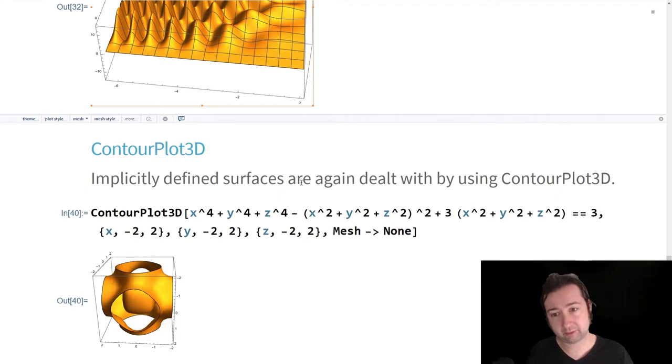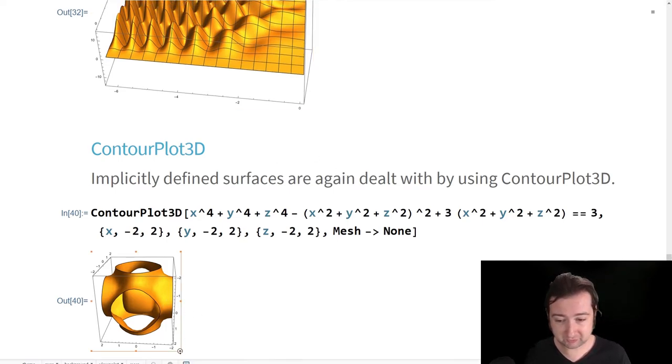Contour plot 3D is a way of working with implicitly defined surfaces. And many of the most interesting surfaces are implicitly defined because you're not going to be able to do anything that wraps back around itself, like even a sphere, unless you're working implicitly. Contour plot 3D can take pretty complicated implicitly defined equations in and then produce pretty good looking graphs on the other side.